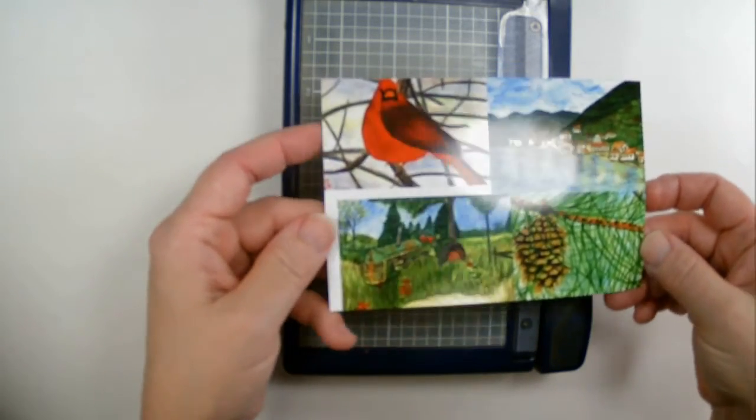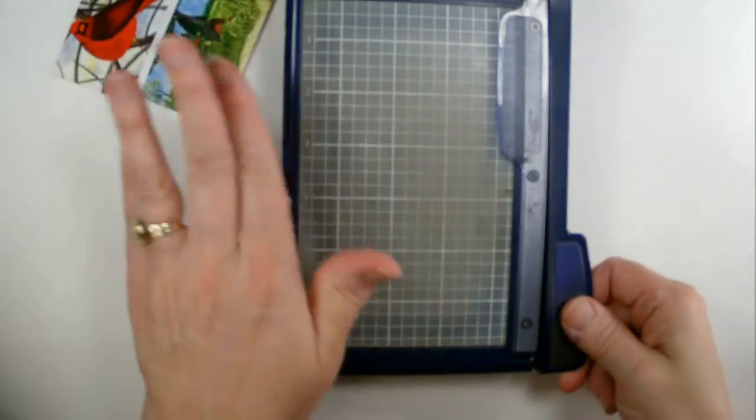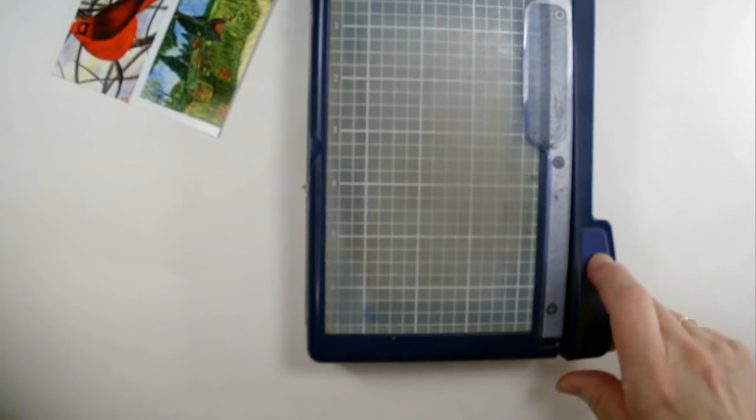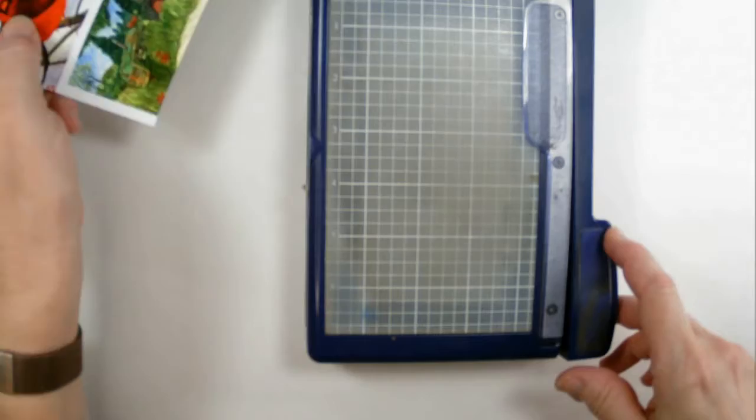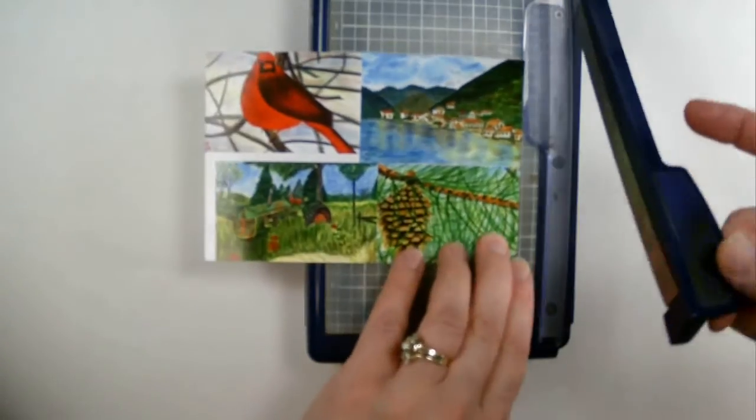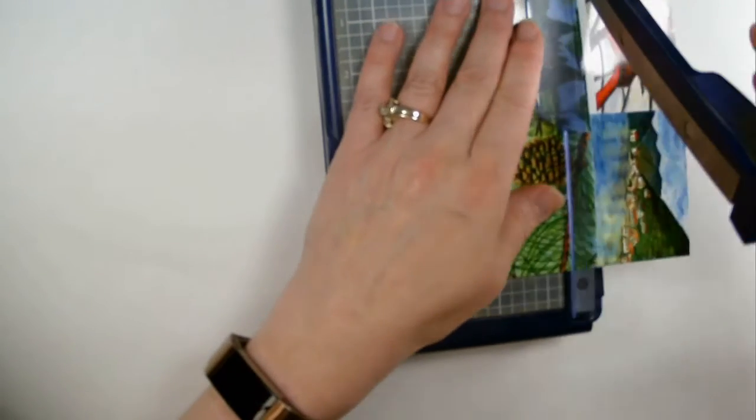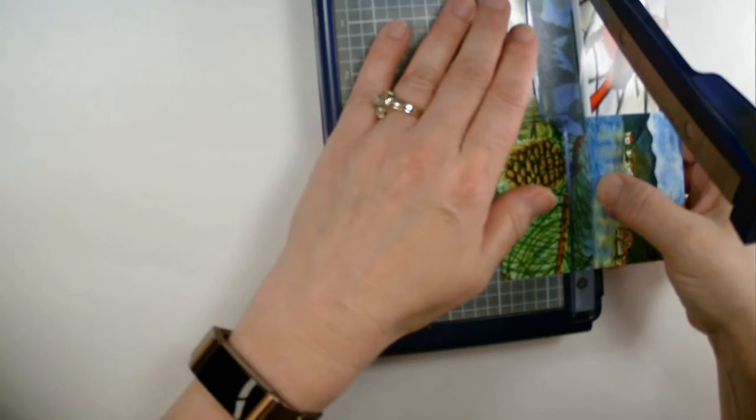Once I get my photograph back, I have my handy dandy little guillotine cutter here. I've had this for years—I got it from Creative Memories probably about 10 or 15 years ago by now. I just cut my photograph to be the appropriate size for the magnet.